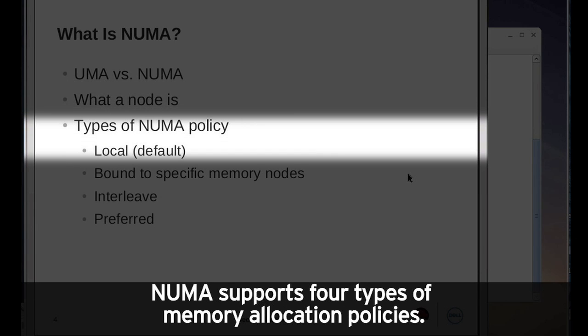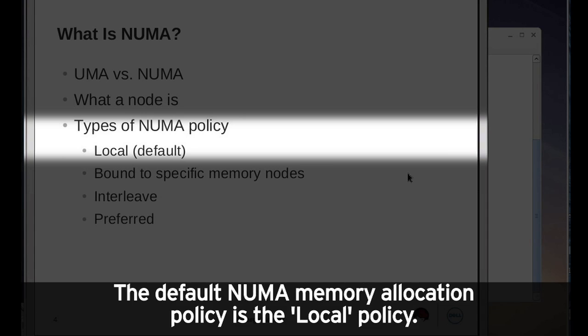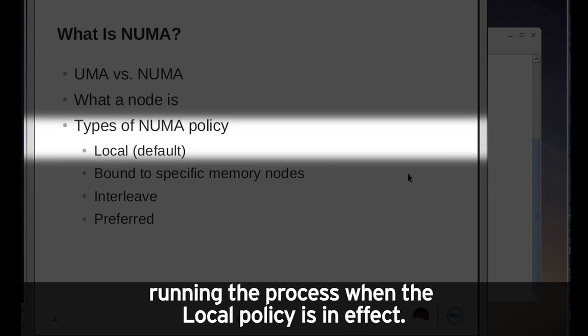NUMA supports four types of memory allocation policies. The memory allocation policy defines how memory will be allocated from the different nodes in a system. The default NUMA memory allocation policy is the local policy. When a process requests memory, the memory is allocated from the node of the CPU running the process when the local policy is in effect.